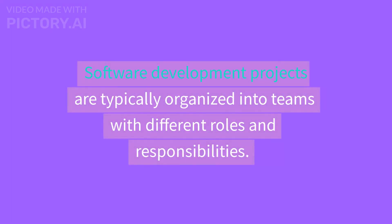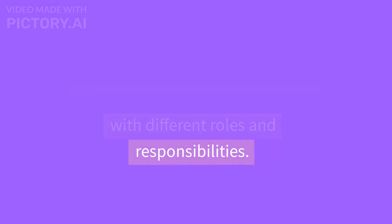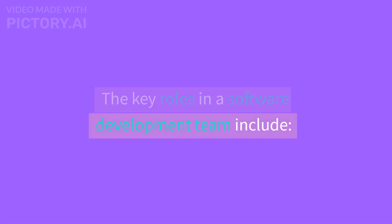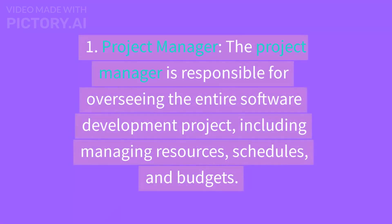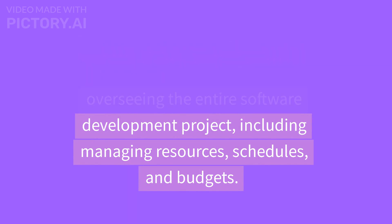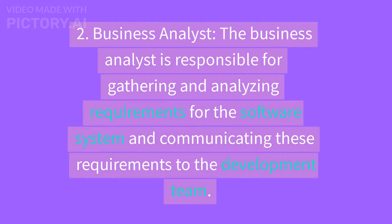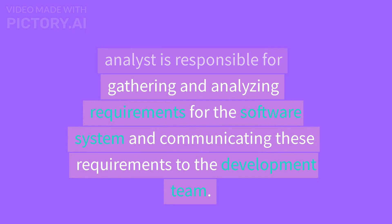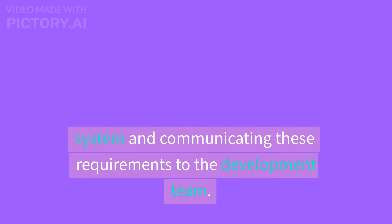Project Organizations and Responsibilities. Software development projects are typically organized into teams with different roles and responsibilities. The key roles include: 1. Project Manager — responsible for overseeing the entire project, including managing resources, schedules, and budgets. 2. Business Analyst — responsible for gathering and analyzing requirements for the software system and communicating these requirements to the development team.